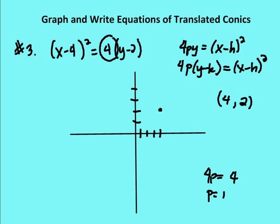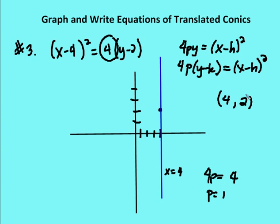I also identify the axis of symmetry, which is vertical in this case and runs right through the vertex. The axis of symmetry is x equals 4. Then I move p units — one unit — up along the x equals 4 axis to identify my focus, which is at (4, 3). My vertex is at (4, 2).